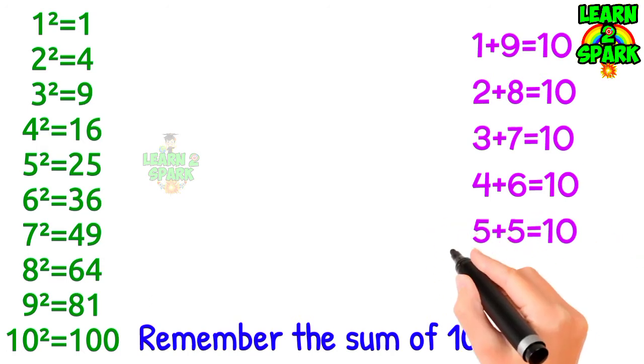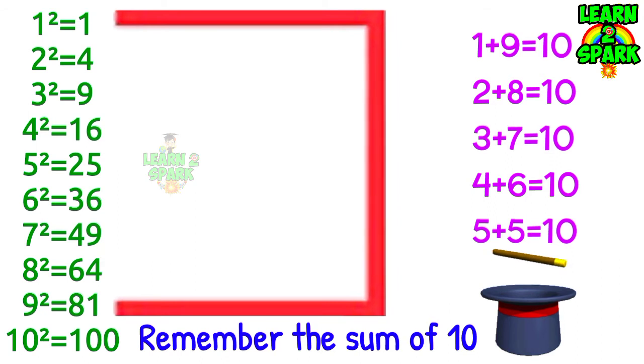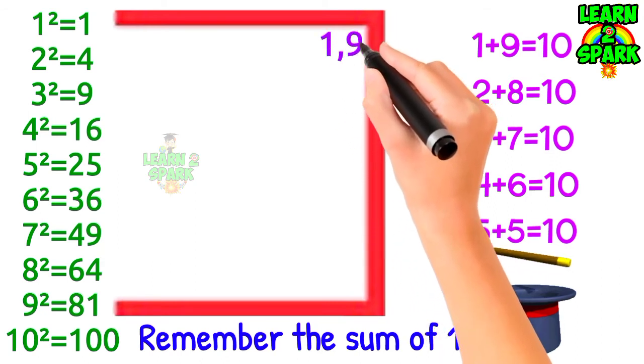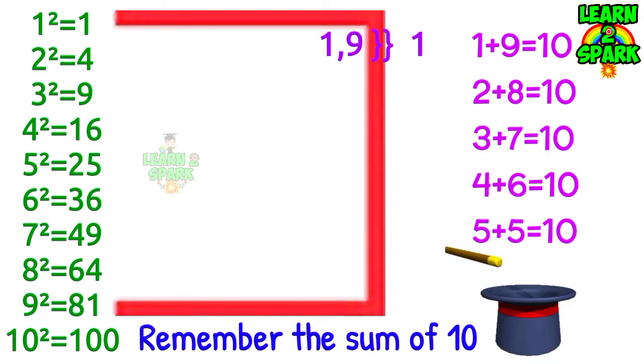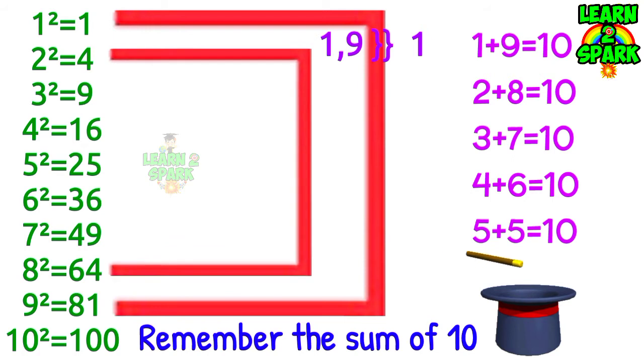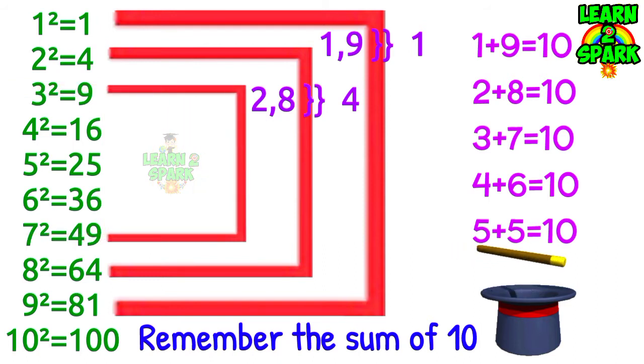Now see the magic of this combination. Just check out squares of 1 and 9 have got units place 1. Which means 1 square 1 and 9 square 81 both are having 1 in its units place. Like that, 2 square 4 and 8 square 64 has got 4 in its units place. Similarly, 3 square and 7 square has got 9 in its units place.